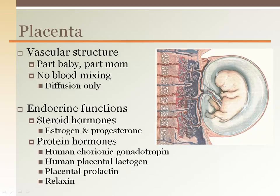The placenta has the mother side and the chorion is on the baby side. The blood does not mix, but travels close to each other, allowing optimal diffusion of waste and absorption of oxygen and nutrients by the baby. There are many hormones produced by the placenta.